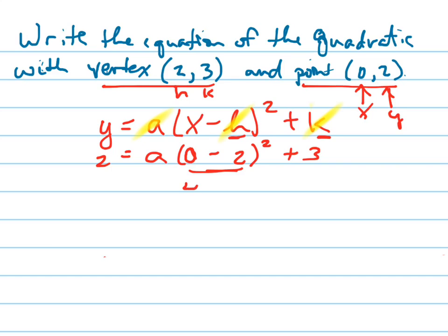So when I solve this, negative 2 squared is 4, so that's 4a plus 3 equals 2. Subtract 3 from both sides, you get negative 1 equals 4a. Divide both sides by 4, you get a equals negative 1 fourth.